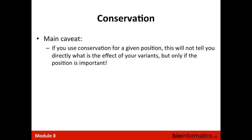Q: So if the substitution rate is slower, the PhyloP score would be closer to 2 — meaning fewer substitutions? A: Yes — if it's a positive number, the region is more conserved, meaning substitutions occur less frequently. An important limitation of conservation-based scores is that they tell you a position is important, but not whether the specific change at that position is important, or which change matters. You only know that region is generally important.